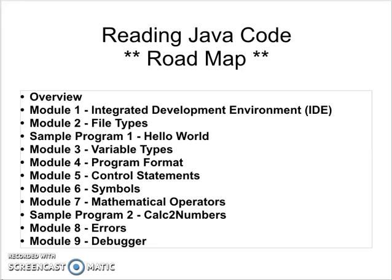Module 3: Variable Types. We will talk about the various variable types that are used in Java programs. Module 4 will be Program Format, where we talk about the different formattings that will make the code more maintainable, easier to read, and easier to diagnose and debug.